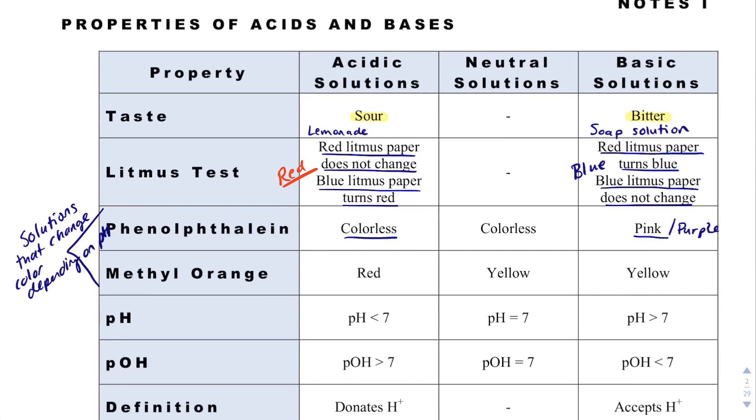And then methyl orange, another indicator solution, will be red. I always like to tie it up with the litmus red under acidic solutions, and then yellow under basic solutions. And we'll talk more about that when we get to something called titrations.